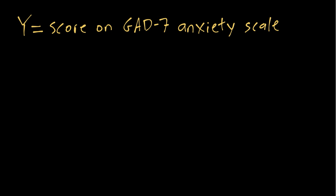To think about the difference between these three types of questions, we'll use an example where our Y variable is an individual's score on the GAD-7 anxiety scale. GAD stands for generalized anxiety disorder, and the seven is just how many questions there are.